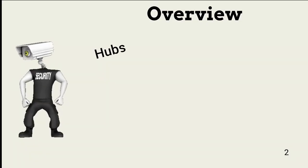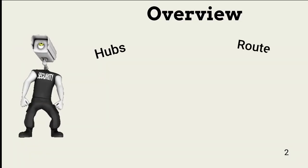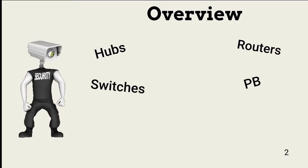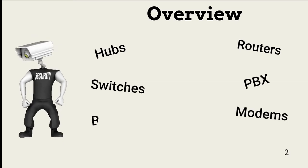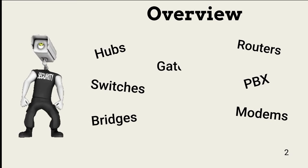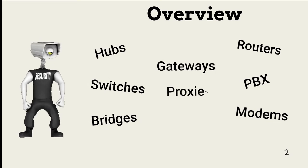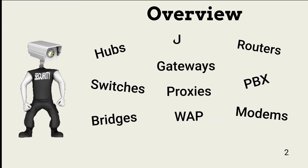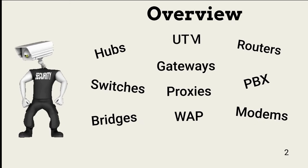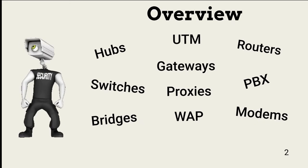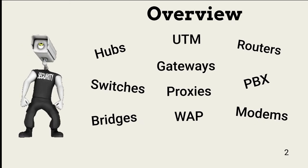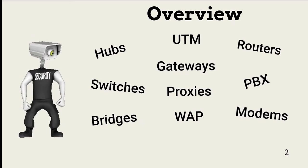Throughout this video we will look at a number of network connected devices that affect security: hubs, routers, switches, PBX switches, modems, bridges, gateways, proxies, wireless access points, and unified threat management. It's a long list so let's get started.